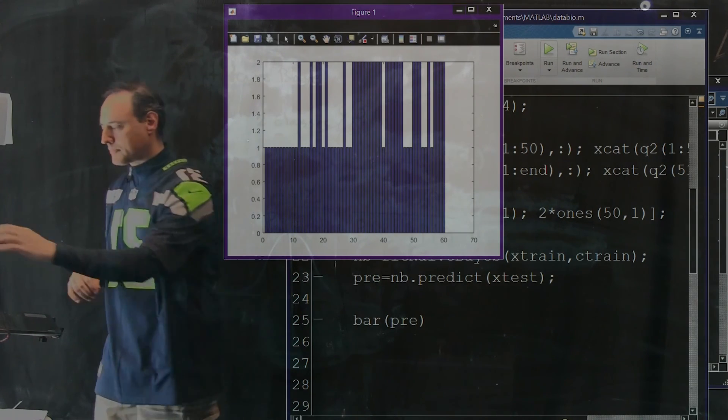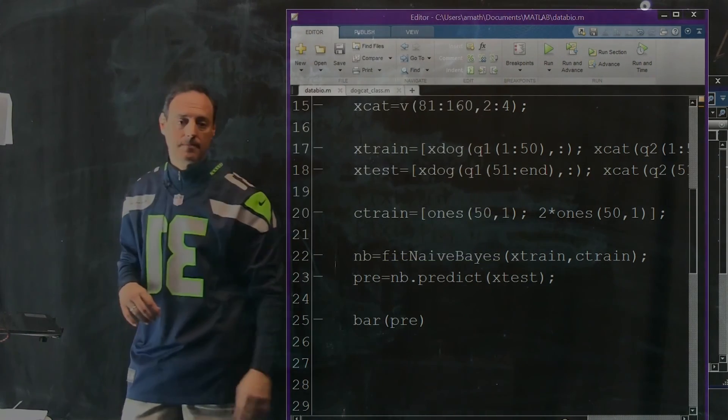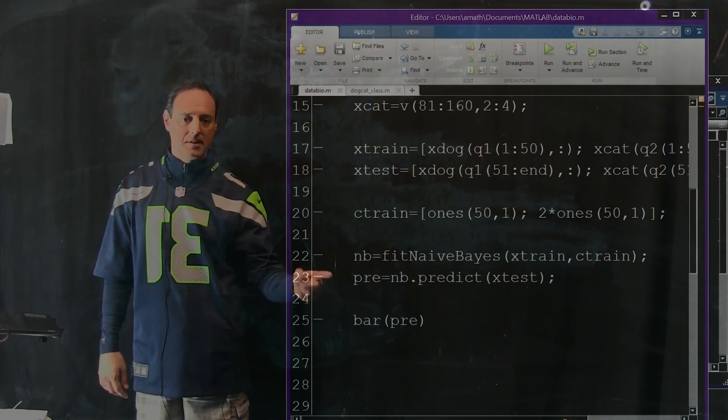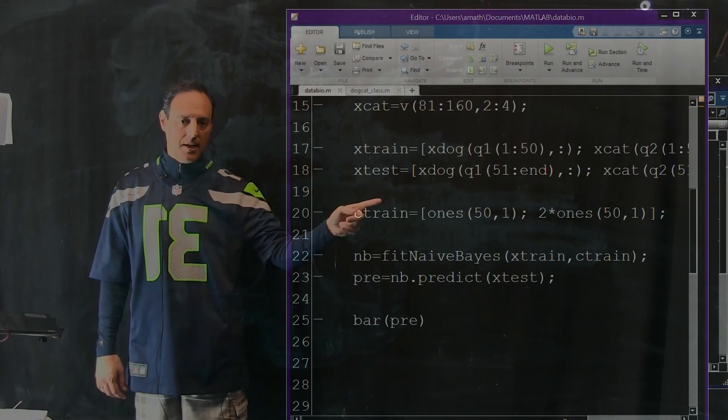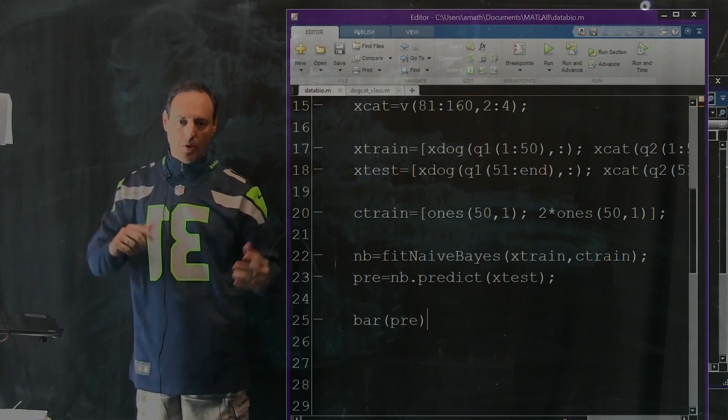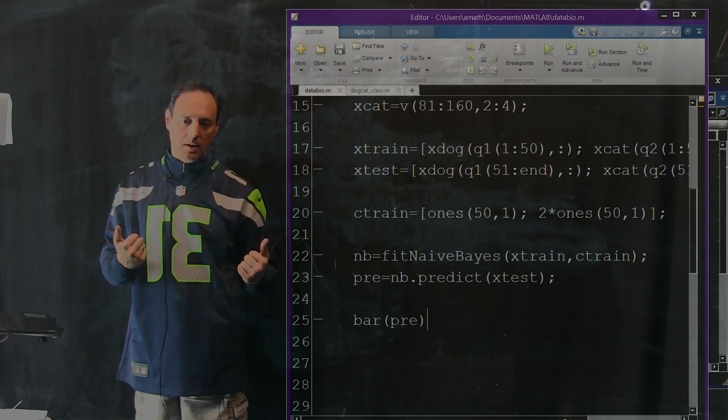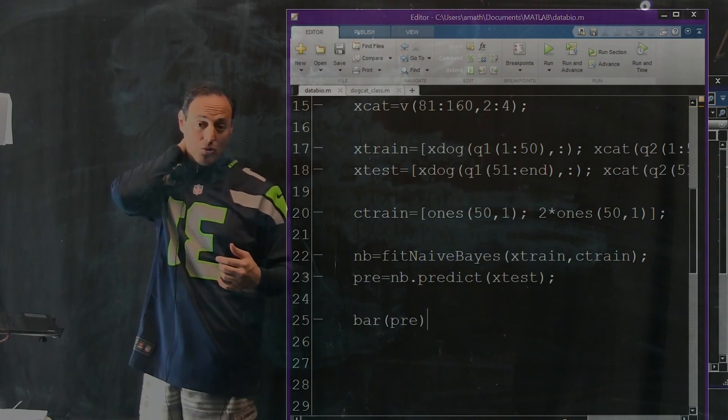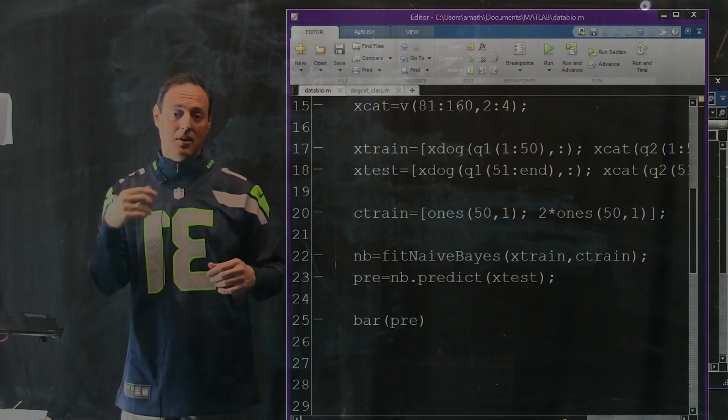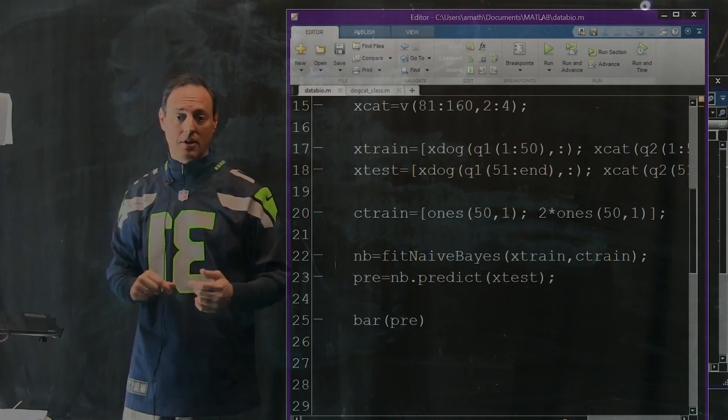So, that is the naive base. Very important method. Two lines of code. Here it is. It's that simple. Training data, which is labeled, predict. So, you have that available to you now. And it's something that you can use. You can use this. You can use Gaussian mixture. You can even test them against each other. But this is a supervised algorithm versus Gaussian.